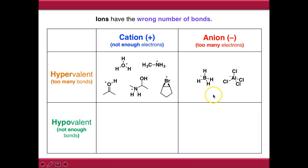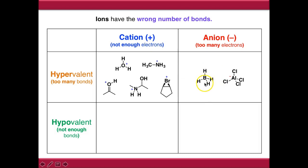If we move across to the hypervalent anions, these are slightly rarer, but the ones that are important for these modules are borohydride, which is a strong reducing agent where boron is making too many bonds, but it's anionic because it has too many electrons. And there's also the aluminium tetrachloride ion, which is a mechanistic intermediate in many Friedel-Crafts reactions.